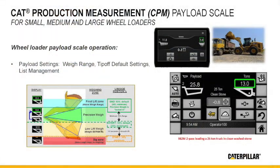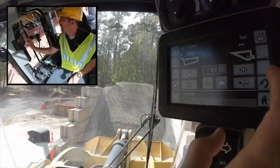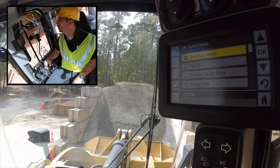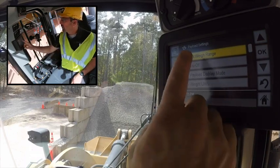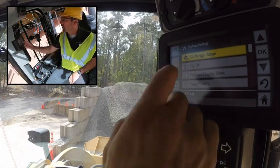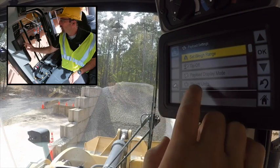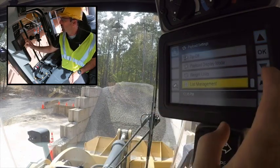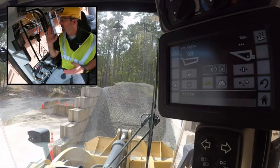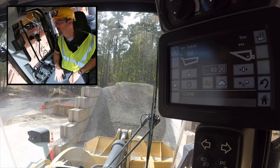Now I'm going to show you where those payload settings are. Go into the payload settings menu in the top right corner, and you can see you've got your setway range, tip-off feature, payload display mode, weight units, as well as list management — all right there in that one payload settings menu.